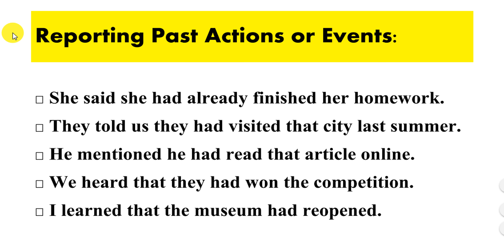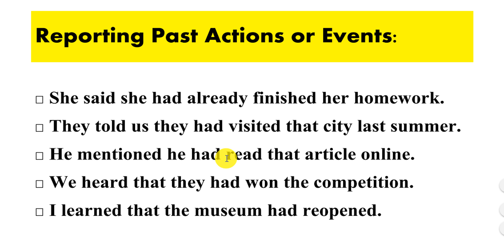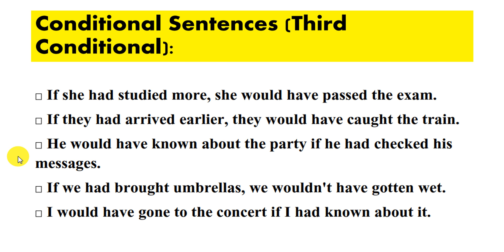The past perfect tense is used for reporting past actions or events. For example: she said she had already finished her homework; they told us they had visited that city last summer; he mentioned he had read that article online.